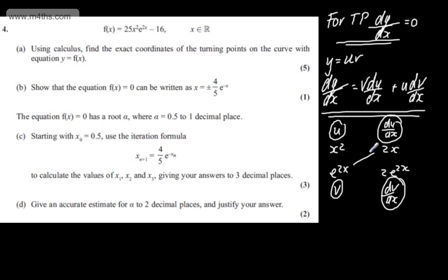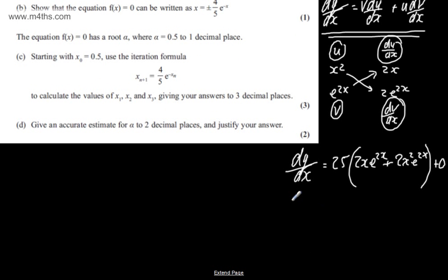I multiply these two and then add to it the multiple of these two. So I can say that dy/dx, the gradient function, bringing back my constant 25, we're going to have 2x e to the 2x plus 2x squared e to the 2x, and then differentiating minus 16 will give me 0.